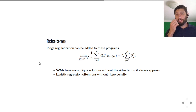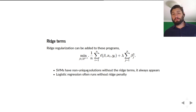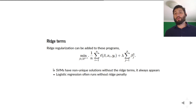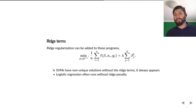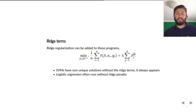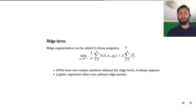SVMs without the ridge term actually have a non-unique solution. You can imagine that because of the piecewise linearity of the loss, you might have these issues of non-unique solutions. So we always include it in support vector machines. Typically it's not too hard to tune lambda — it's not very sensitive to tuning — but if lambda becomes too extreme it'll give you bad values. This is not a make-or-break term; it's just something we add in for numerical stability.